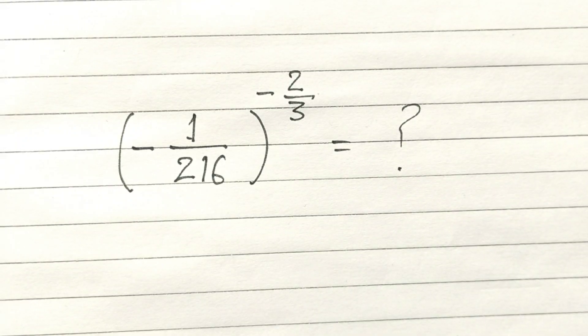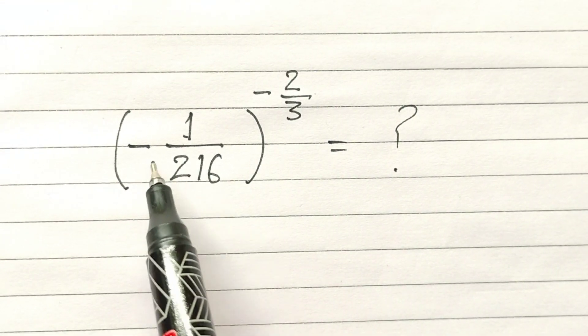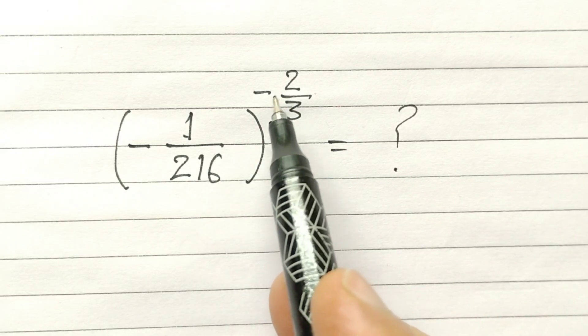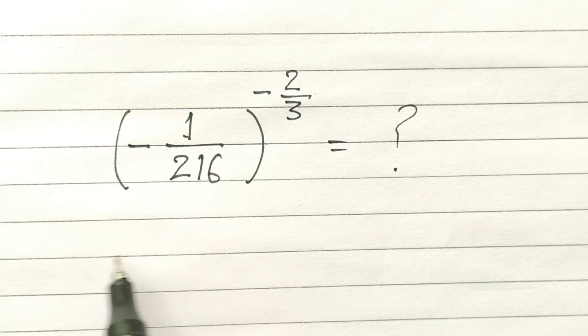Hi friends, we have to simplify (-1/216)^(-2/3). Okay, so let's start.